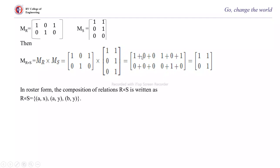Computing: 1×1+0×0+1×0=1 for element (1,1). For first row, second column: 1×1+0×1+1×1=1+0+1=1 (using Boolean, 1+1=1). Likewise, you get the result matrix as [[1,1],[0,1]]. In roster form, the composition R∘S={(a,x),(a,y),(b,y)}.